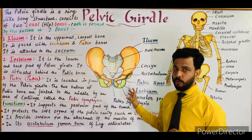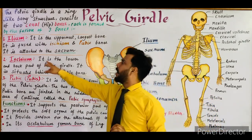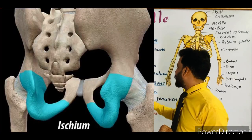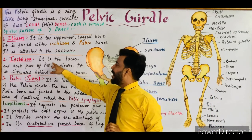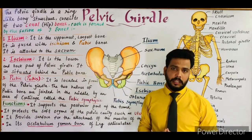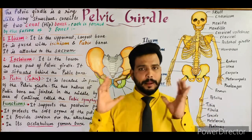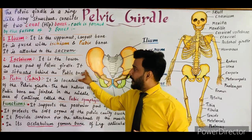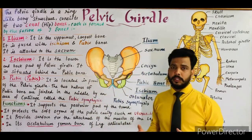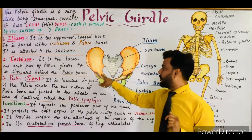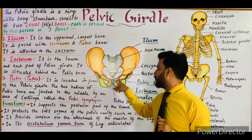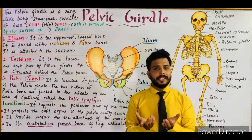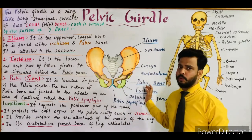The second bones are the ischium. These green-colored bones are known as the ischium. It is the lower and back part of the pelvic girdle — the ischium bones form the back and lower portion. It is situated behind the pubic bones. As you can see in the diagram, the brown-colored bones in front are the pubic bones, while the ischium is situated at the back and lower side.